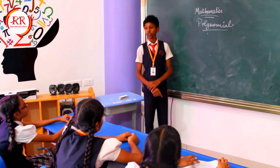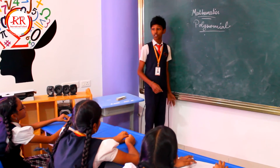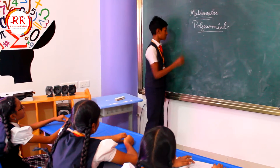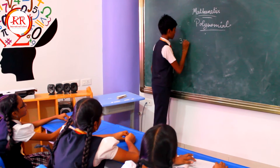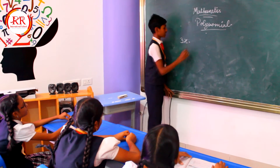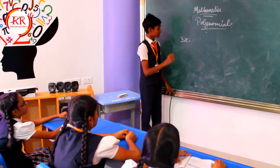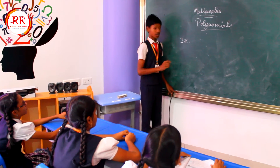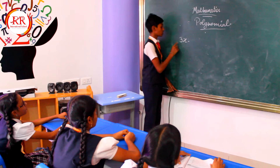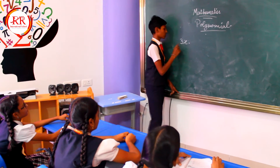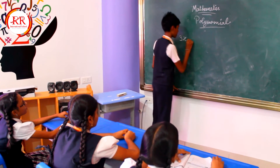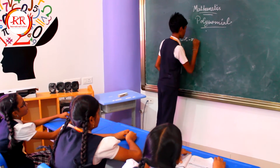Hi friends, I am going to explain about the lines of polynomials. 3x is a polynomial and it has one term. It is the polynomial of one term, so we can say it is a monomial.